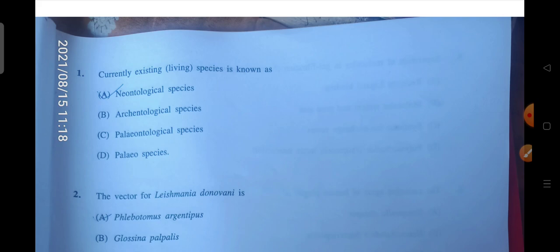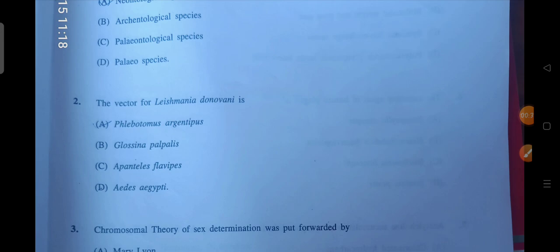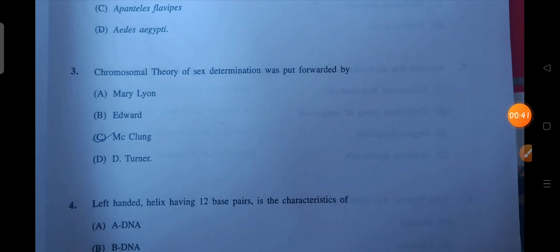The first question is: currently existing living species is known as. So the right answer will be A. Next is the vector of Leishmania donovani. So the vector is what? A will be the correct answer.